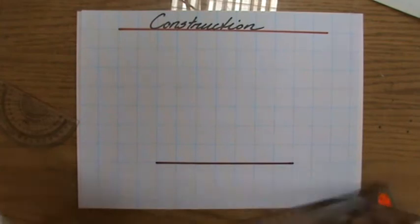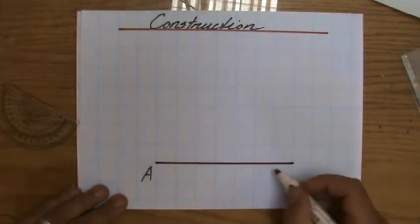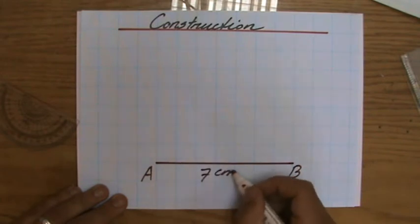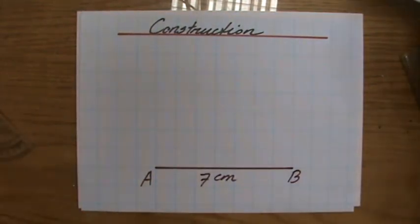I label it AB, 7 centimeters. There we go, 7 centimeters. Then I continue.